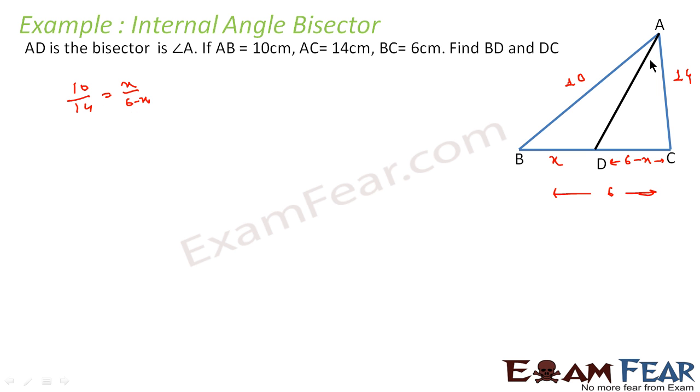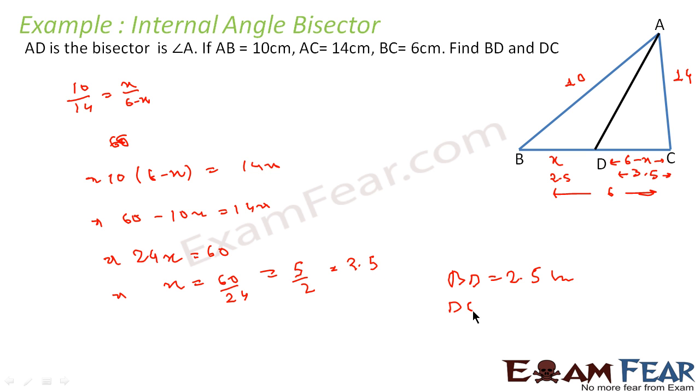AB by AC is equal to BD by DC. Or we get 10 into 6 minus X is equal to 14X, or I get 24X is equal to 60, or I get X is equal to 60 by 24, that is 5 by 2, that is 2.5. So if I got this I got BD is equal to 2.5 cm and DC is equal to 3.5 cm. And that is my answer.